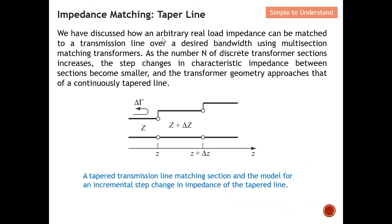We have already discussed how a real load impedance can be matched to a transmission line over a desired bandwidth using either a single or multiple section matching transformer. We discussed how to match using either a lambda-over-four matching transformer or multiple sections. As the number N of discrete transformer sections increases, you can imagine the step change in characteristic impedance between sections actually becomes smaller.